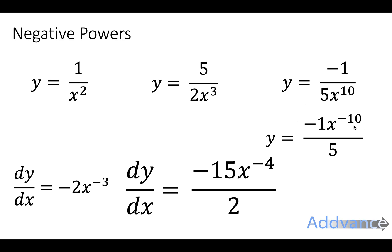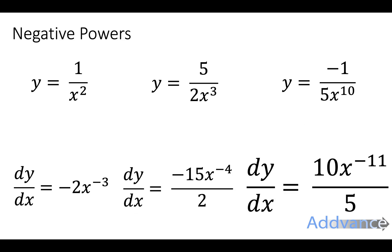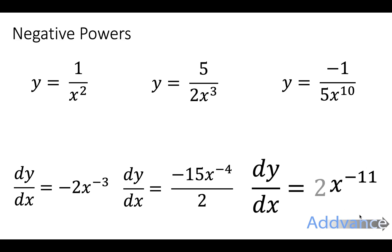For the final one, we multiply down by minus 10. Minus 1 times minus 10 is plus 10, and then minus 10 minus 1 is minus 11. So it becomes 10 over 5 times x to the power minus 11, which simplifies to 2x to the power minus 11. And that's how you differentiate when you've got a divide by an x to the power — you just make the power negative.